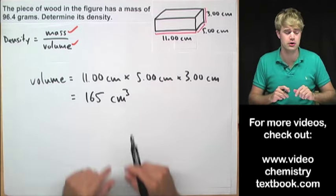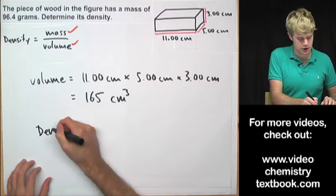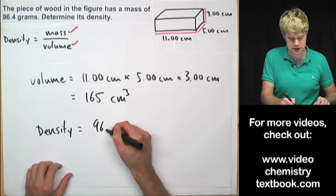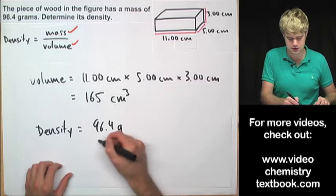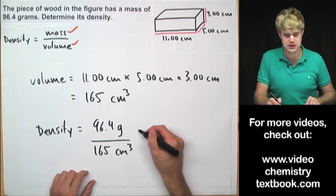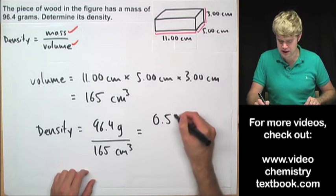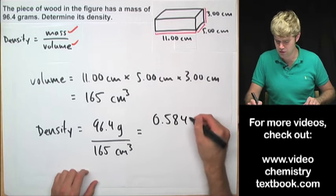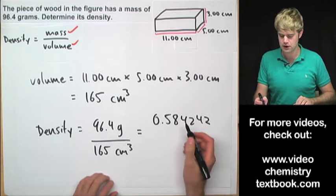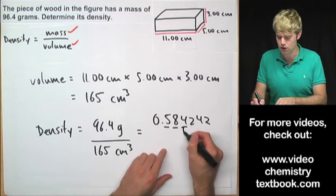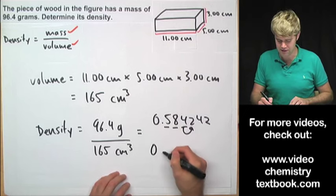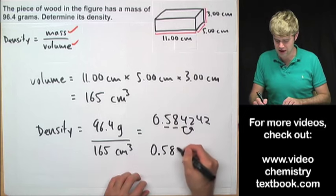Okay, so now I know the volume. So to determine the density, I'm going to take my mass 96.4 grams and divide it by my volume which is 165 cubic centimeters. I'm going to get this answer 0.584242, but I have three significant figures here and three significant figures here. So that means I'm going to take the 5, the 8, and the 4. Look here to see whether I keep it the same or round up. I keep it the same. And I'll arrive at a final answer of 0.584.